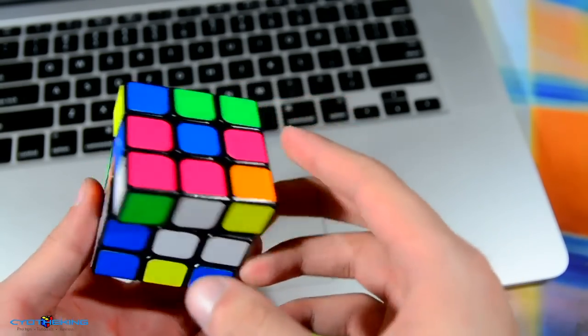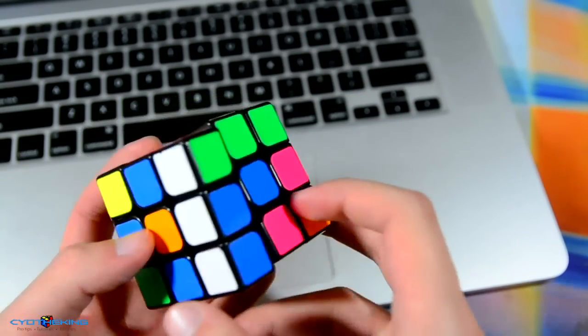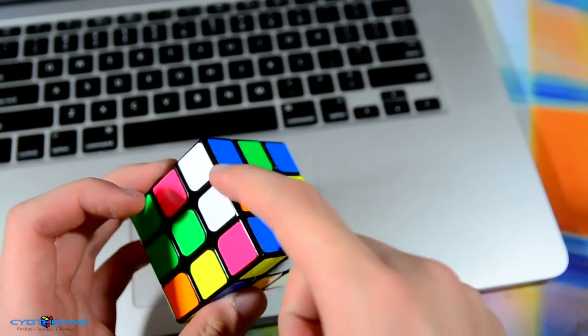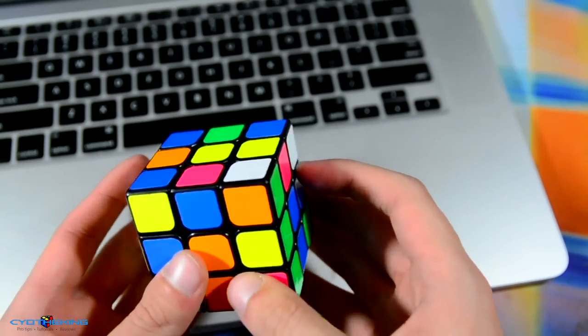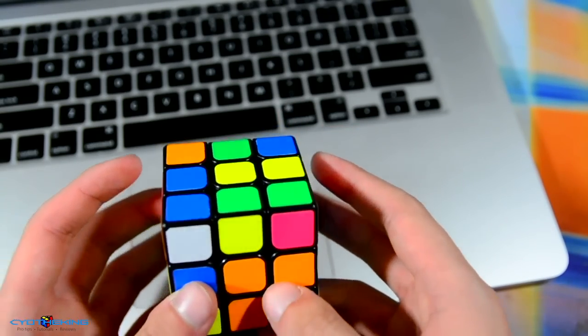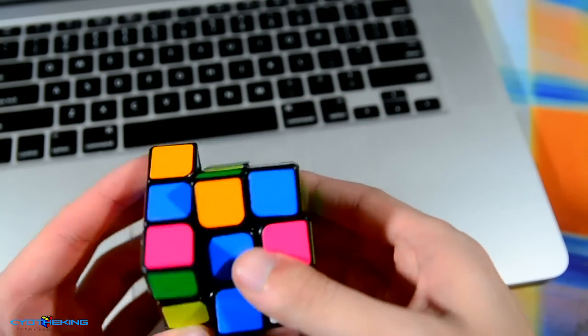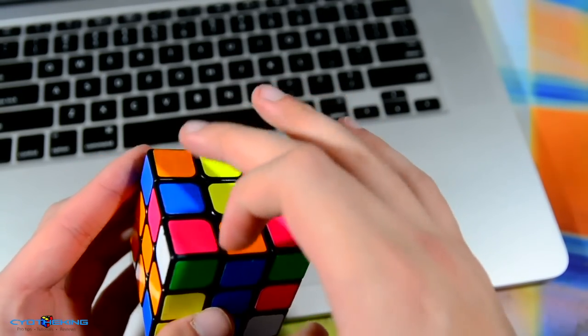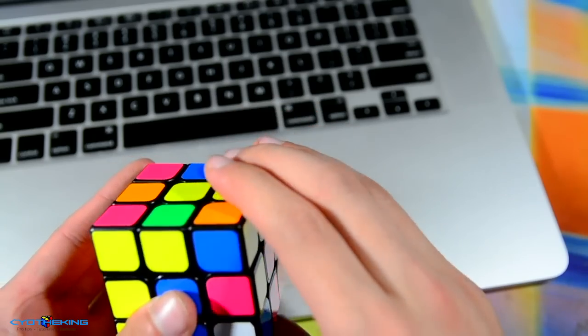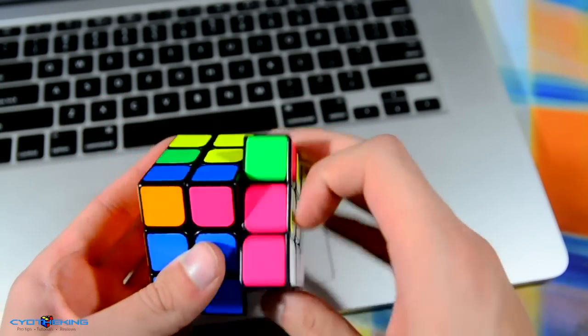I did that, set these up, put this blue-white piece up, fixed my cross R prime. This piece stayed here the whole time, I did a sledgehammer with that and tracked this pair while I did it. Did a U2, solved this pair, then solved this pair like that. Then this one is just triple sexy move.